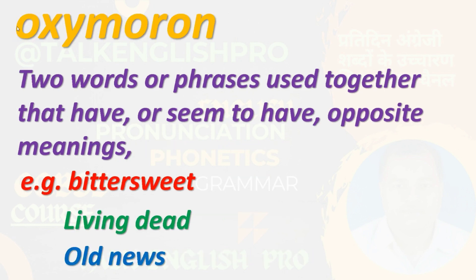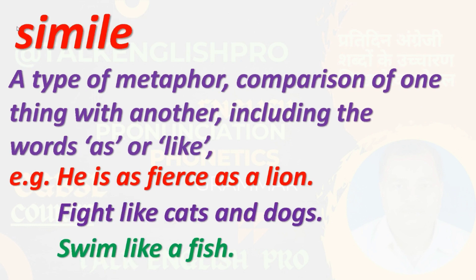Oxymoron refers to two words or phrases used together that have, or seem to have, opposite meanings. The two words are opposite in sense but used together — for example, 'bittersweet.' In India, we say 'khatti-meethi' (sour-sweet). Another example is 'old news.' This is called an oxymoron.